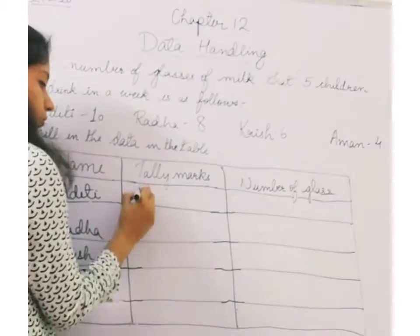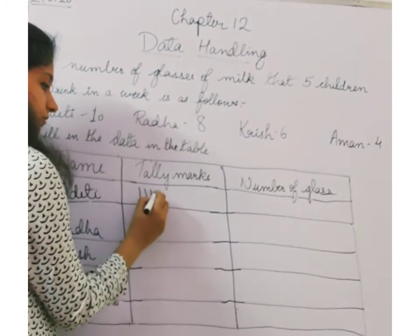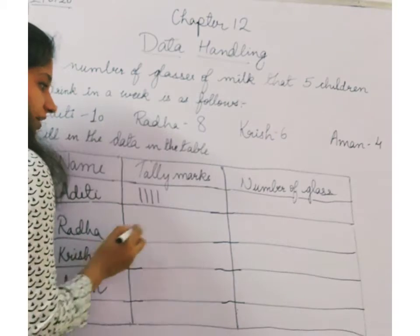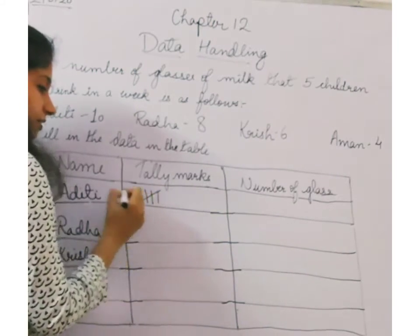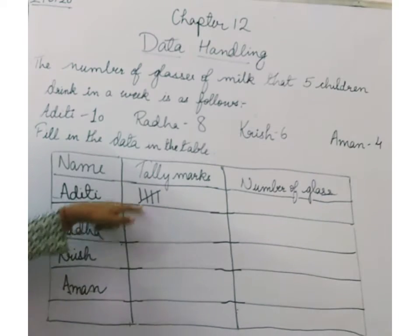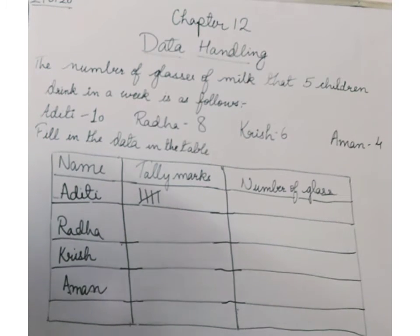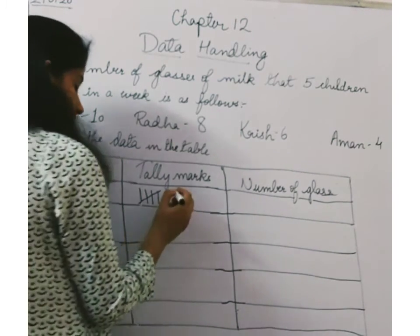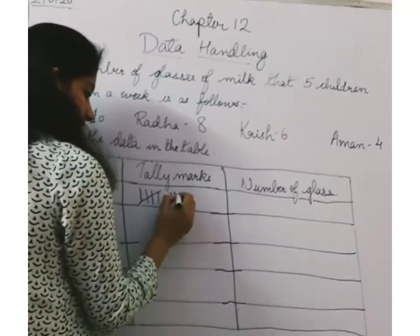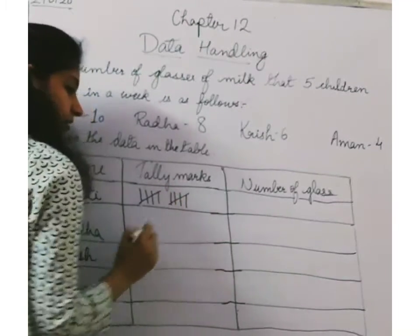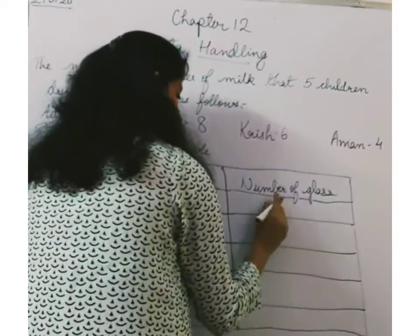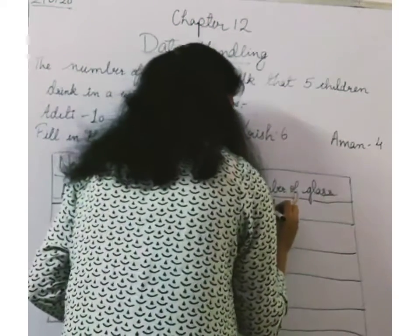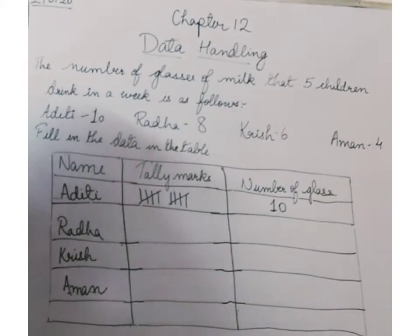You can count with me: one, two, three, four, and five will go like this — at five we strike out. Then six, seven, eight, nine, ten. And here I will write down ten. So Aditi drinks ten glasses of milk per week.